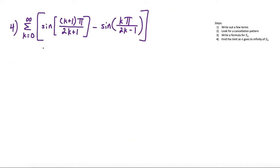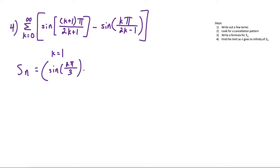For the last question, we're dealing with a series involving the sine function. We follow the same steps and write out the first few terms for the sum of the first n terms. At k equals 1, we have sine of 2π over (2·1 plus 1) = sine of 2π/3, minus sine of π over (2·1 minus 1) = sine of π.